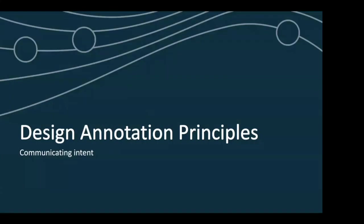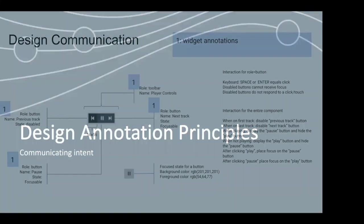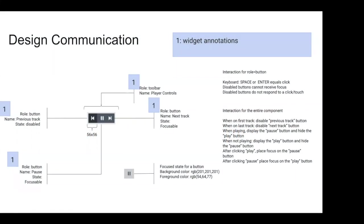Let's get into annotations and how we can communicate intent. The first type is widget annotations. We're going to be looking at the same wireframe — an audio player control with a previous track, play/pause, and next track button. Widget annotations cover the purpose (the role) of the given component as well as the accessible name — meaning what will be read out when a user interacts with that content.